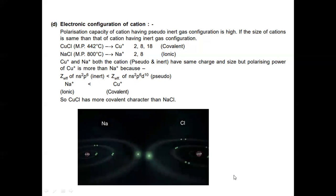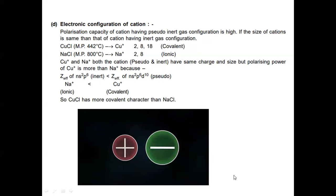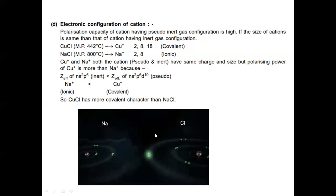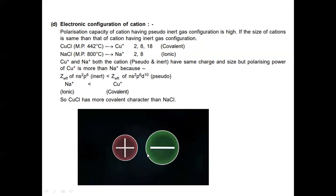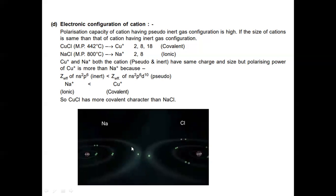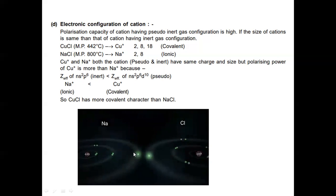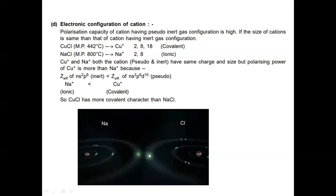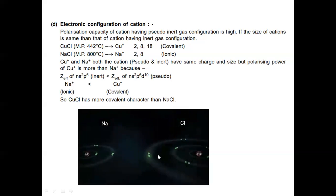In the formation of NaCl, sodium donates one electron to chlorine. Chlorine accepts one electron from sodium. Sodium after donating becomes Na⁺, and chlorine after accepting becomes Cl⁻ ion.